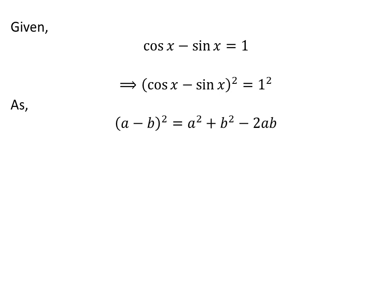As we know, square of (a minus b) is equal to square of a plus square of b minus 2 times a times b. Applying this formula gives us: square of cosine of x plus square of sine of x minus 2 times cosine of x times sine of x is equal to 1.